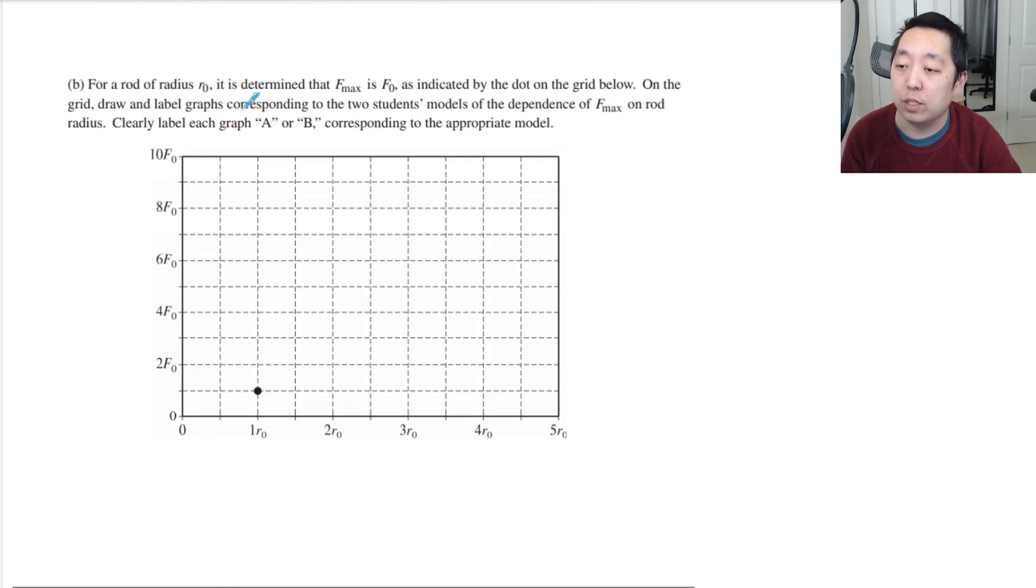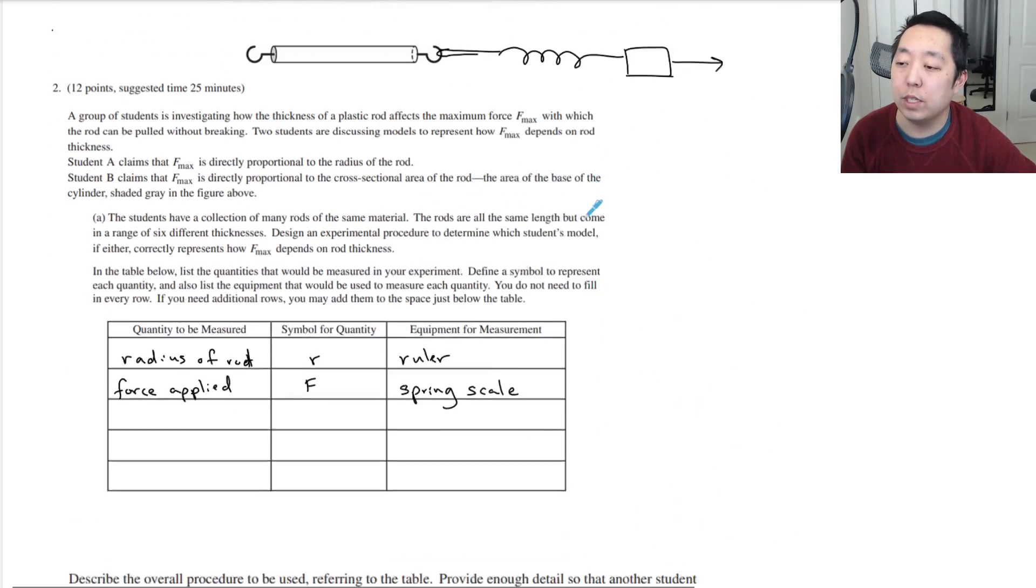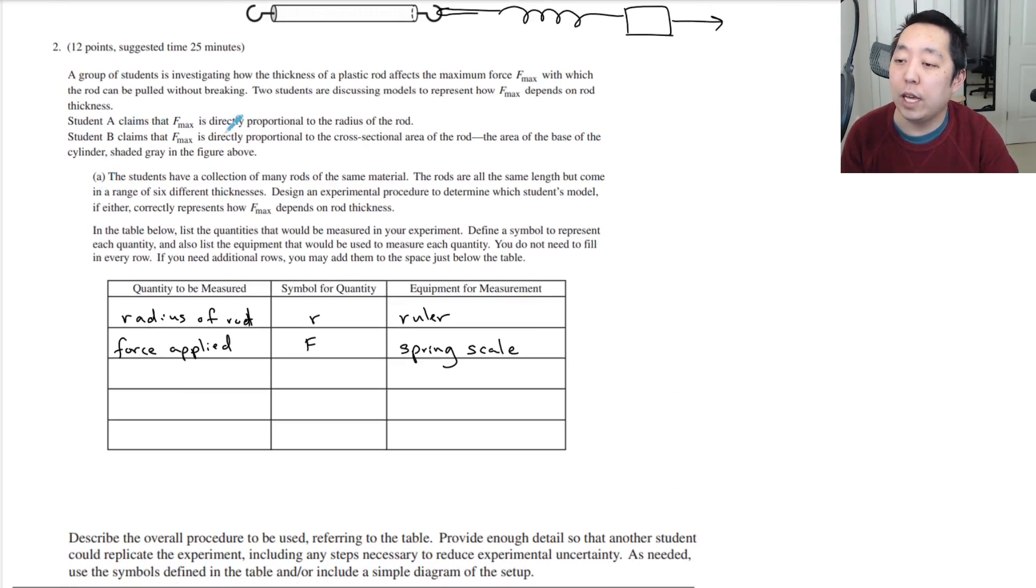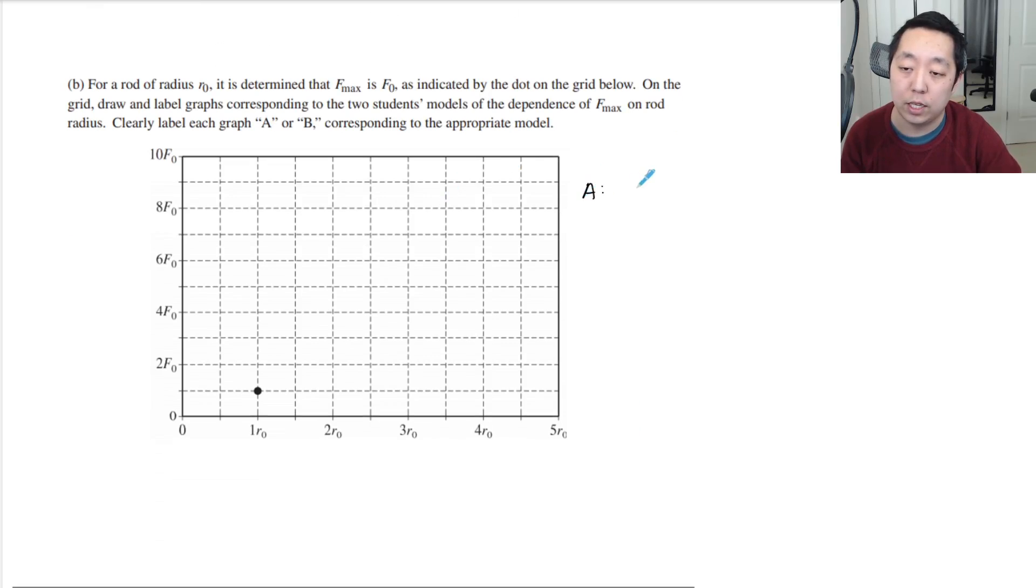Okay, for a rod of radius r0, it is determined that F max is F0, as indicated in the grid below. On the grid, draw and label graphs corresponding to each of the two students' models and the dependence of F max on rod radius. Clearly label each graph A or B. So student A, remember, so what's the difference between the students? Student A thinks it's proportional to the radius. He thinks it's proportional to the cross-section area of the rod. So for student A, his model should look like this.